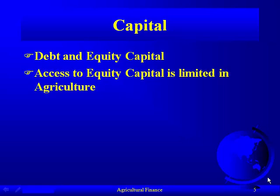In agriculture, access to equity is limited. If you're Microsoft and you want equity to expand, you just sell more stock. But how many farmers do you know that can go out and issue publicly traded stock? You're limited to the equity that you personally have, or the family has, or you might go into a partnership with family members or a trusted friend. There's a limit to that.